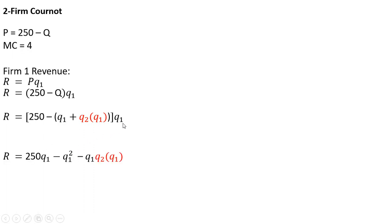Multiplying Q subscript 1 through what's in brackets simplifies to this expression. Now we can take a derivative to get marginal revenue. Taking the derivative of the revenue function with respect to Q subscript 1, we get this result. Notice right here, this last term, the derivative of this last term, we get Q subscript 2, and we get Q subscript 1 times the derivative of Q subscript 2 with respect to Q subscript 1.